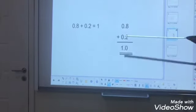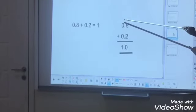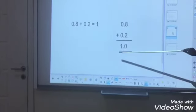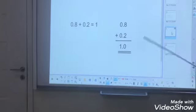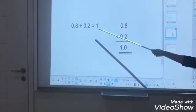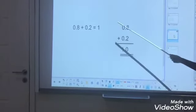Then 0 plus 0, then 0 plus 0, then the carried 1 is here. After adding, you will get 1. That means 1.0, which equals 1. Is that clear?